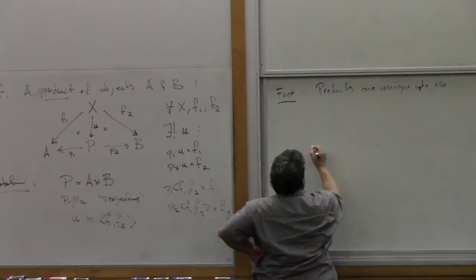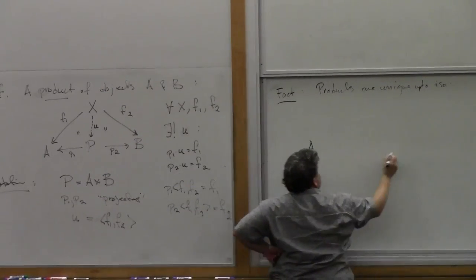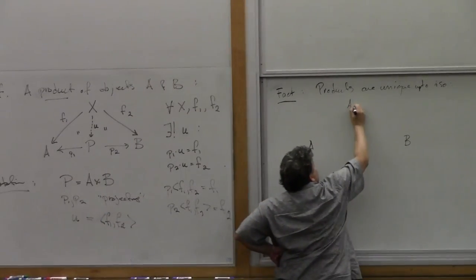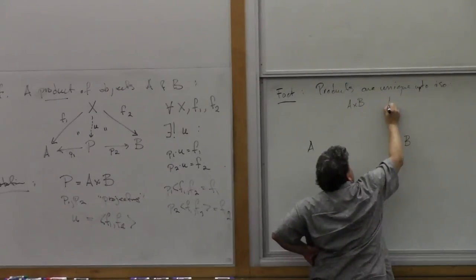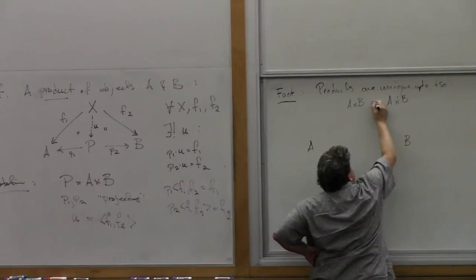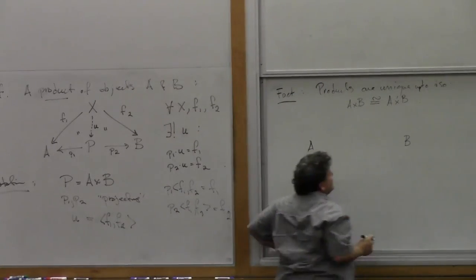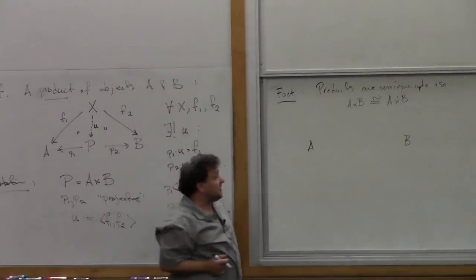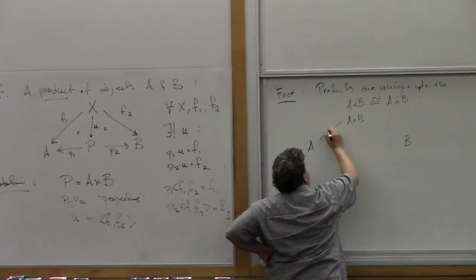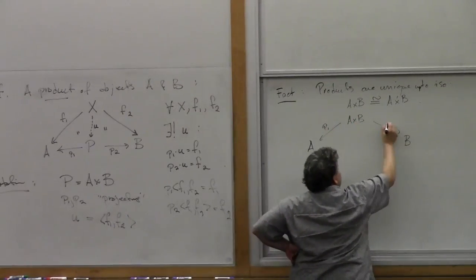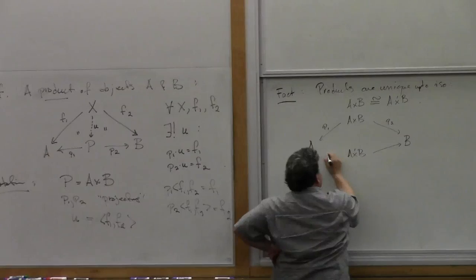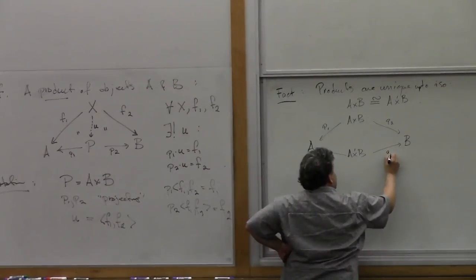What does that mean? Suppose I have objects A and B and I have two products. If I have two different products, they must be isomorphic — that's the claim. Any two products are isomorphic. So let's see how to prove that. We'll take one, say A×B, with its two projections P1 and P2, and another one, A×B, with its two projections Q1 and Q2.